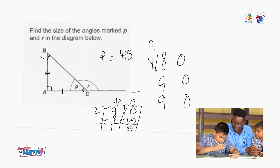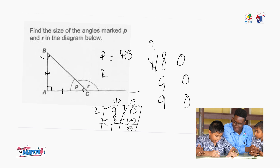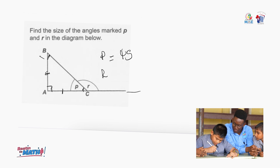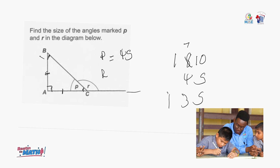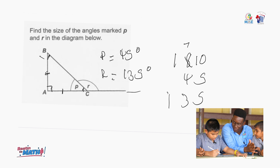Next we want to find R. We can see that it's a straight angle and it is equal to 180 degrees, so we don't have P which is 45 degrees — we're going to subtract it from 180. So R is equal to 135 degrees. Because this was a straight angle, we subtracted 45 from 180. Excellent!